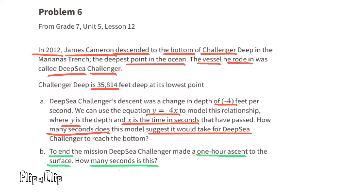Part b: to end the mission, Deep Sea Challenger made a one-hour ascent to the surface. How many seconds is this? There are 60 minutes in one hour and 60 seconds in each minute, so 60 seconds times 60 minutes equals 3,600 seconds in the ascent.